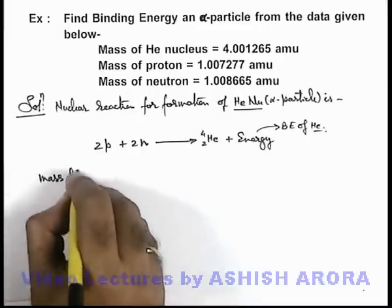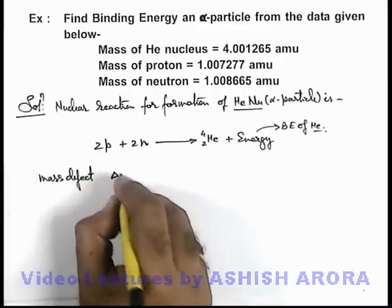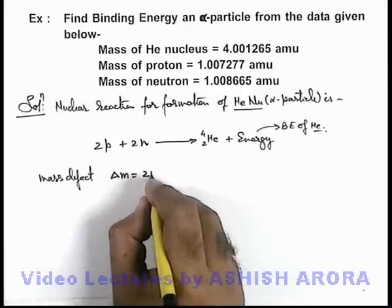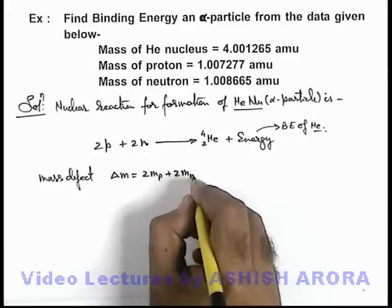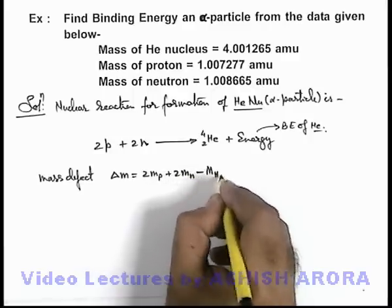If we calculate the mass defect of this reaction, Δm, we can simply write as twice the mass of proton plus twice the mass of neutron minus mass of the helium nucleus.